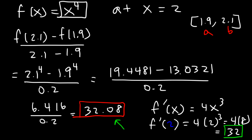Now you might be wondering why we need to approximate it if we already have the function and can find the exact value. Sometimes you may not be given the function — sometimes you might only have a table of values. You can't find the derivative of a function when you don't have it. If you have a table of values, the only way you can approximate the instantaneous rate of change is by using the average rate of change formula.